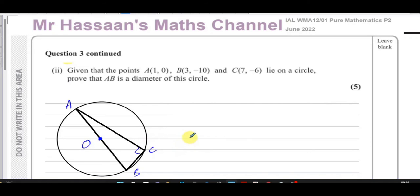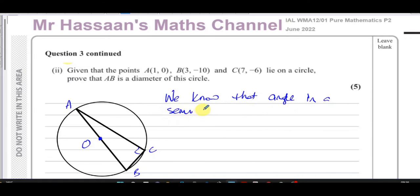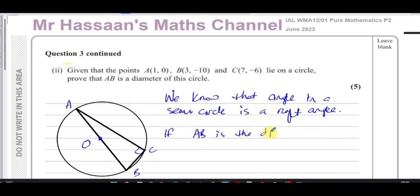Basically, what we should know is that the angle in a semicircle is a right angle. That's something we know for sure — it's one of the rules. So if AB is the diameter of the circle, then we know that angle ACB must be 90 degrees.